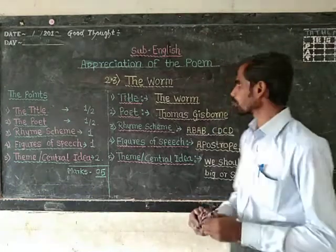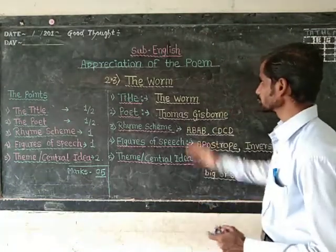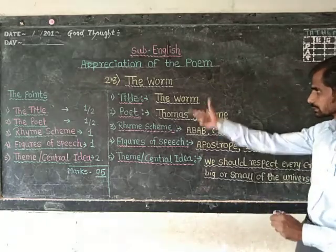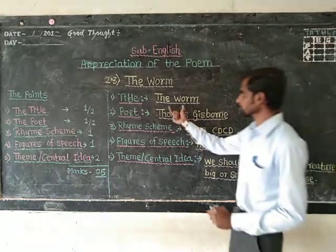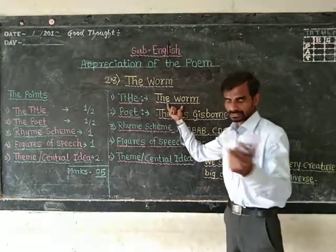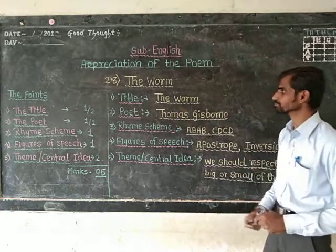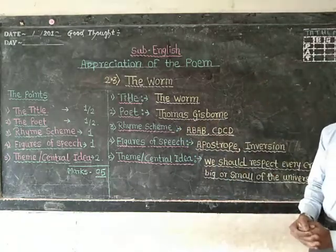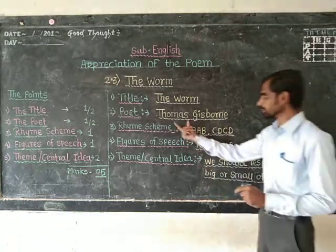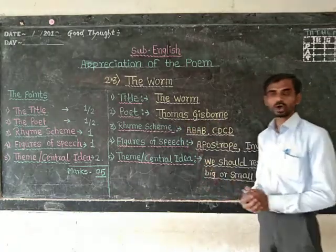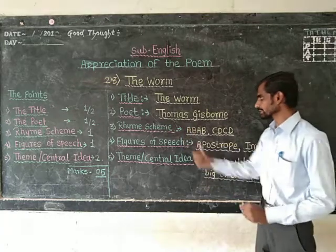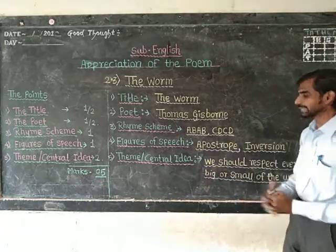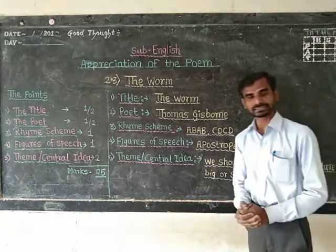Let us start the proper appreciation using the different points. Title of the poem is The Worm. The poet is Thomas Gisborne. The rhyme scheme of the poem is A, B, A, B and C, D, C, D.